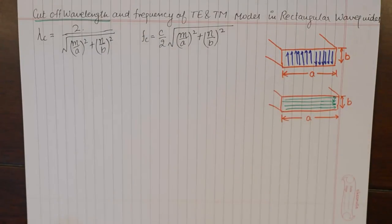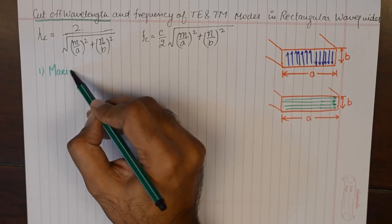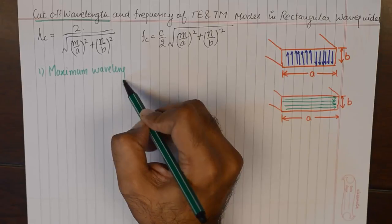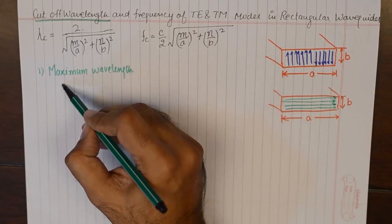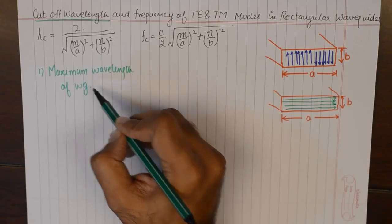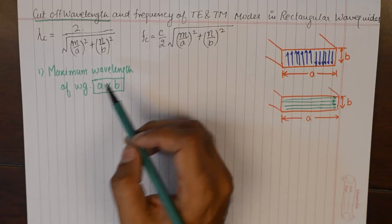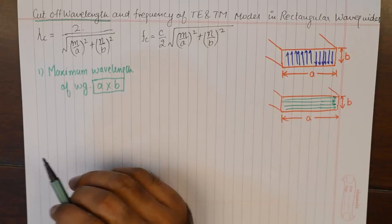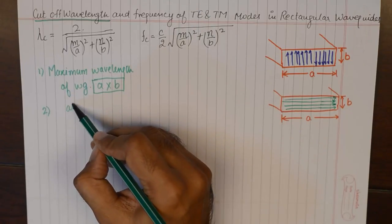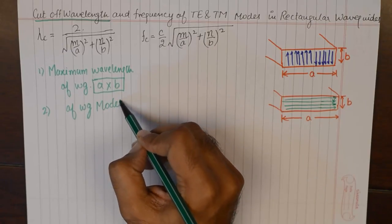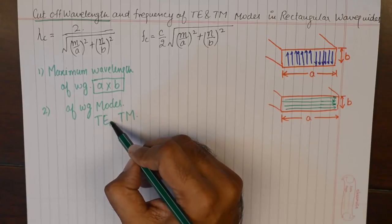There are two things we need to remember while understanding the definition of cutoff wavelength, apart from the formula. The first thing is it is the maximum wavelength supported by a waveguide of certain dimension. The dimensions are A and B and they are not going to change. But that does not mean the cutoff wavelength is also fixed, because it is dependent on the other parameter which is the modes — for example, the various TE and TM modes. The subscript M and N also determine the cutoff wavelength.